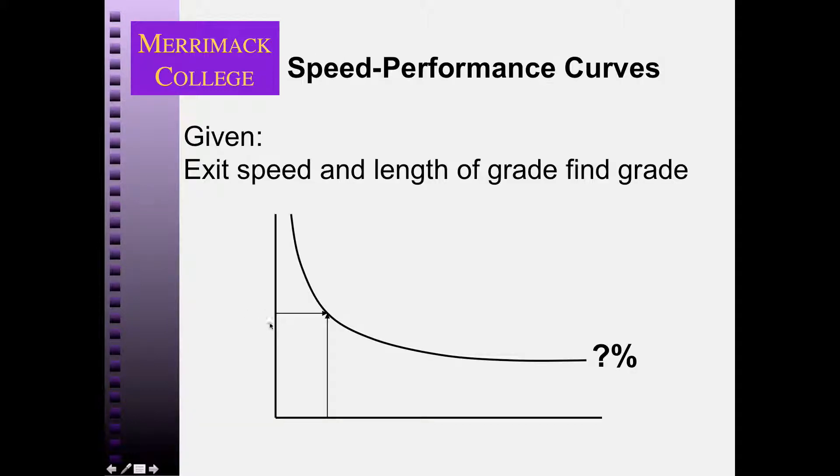Then I can find the single grade that would cause, of that length, that would cause that exit speed. That's the idea. So what single grade causes the same exit speed as that sequence of grades does along the profile?